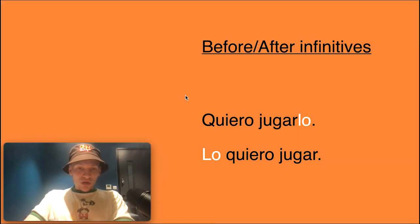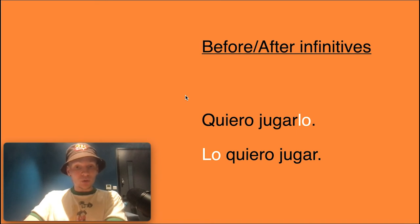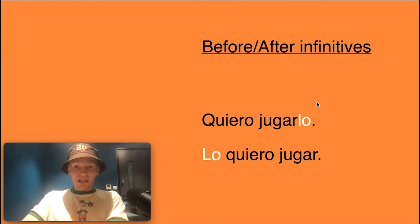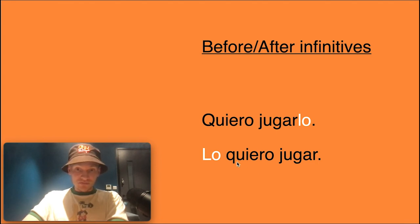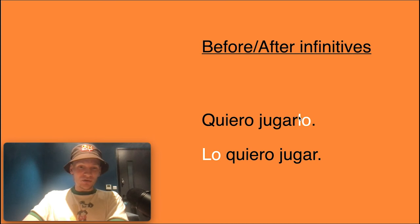Now let's go through placement rules for object pronouns. You've already seen they come before verb conjugations. But with infinitives — unconjugated -ar, -ir, or -er verbs — the pronoun can attach to the end: quiero jugarlo, 'I want to play it.' You can also say lo quiero jugar, since lo comes before the conjugated form of querer. Attaching it to the infinitive is super easy in mid-sentence.